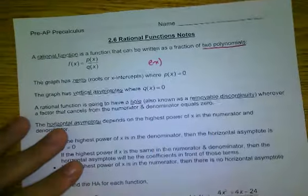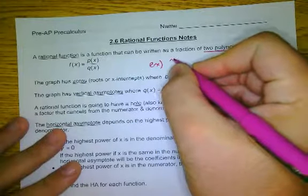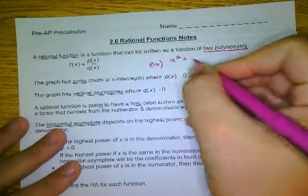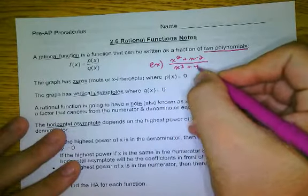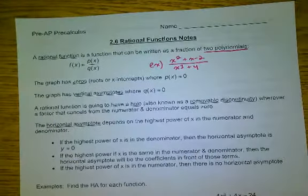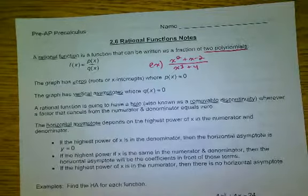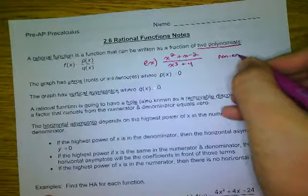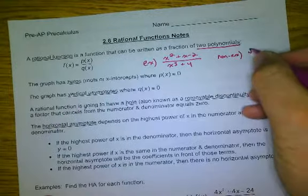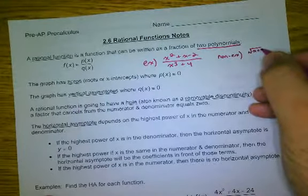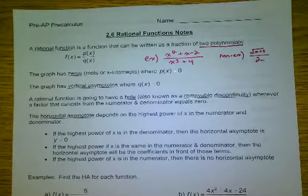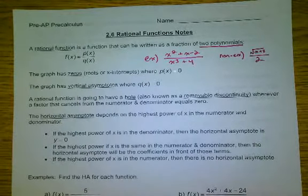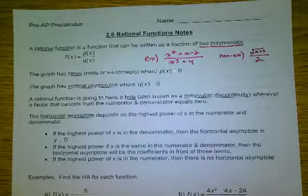An example would be x squared plus x minus 2, all over x to the third plus 4. Those are two polynomials, top and bottom — this is a rational function. A non-example would be something like a square root of x plus 3 over 2. That's a non-example because the top is not a polynomial.